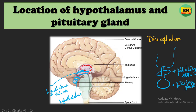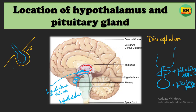This pituitary gland is situated in a bony cavity — a cavity inside a bone. This cavity is called the sella turcica, and this bony cavity is present in the sphenoid bone. The sphenoid bone is a butterfly-shaped bone of the skull. So the pituitary gland is situated in the sella turcica of the sphenoid bone. To summarize: the hypothalamus is located in the diencephalon below the hypothalamic sulcus, and the pituitary gland is located in the sella turcica of the sphenoid bone of the skull, connected to the hypothalamus by means of the pituitary stalk.